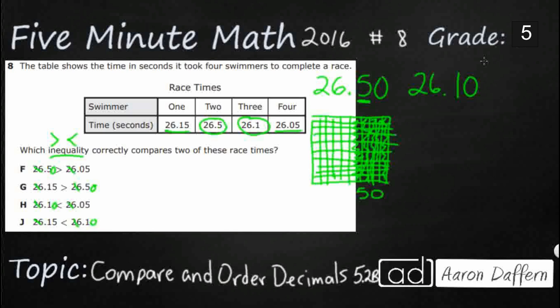Now we can compare, and all we're going to do is compare the decimals. So is 50 greater than 5? Since everything is 26 point, we can just ignore that. Is 50 greater than 5? Yeah, that looks good. So this could be the answer. Let's double check the rest.